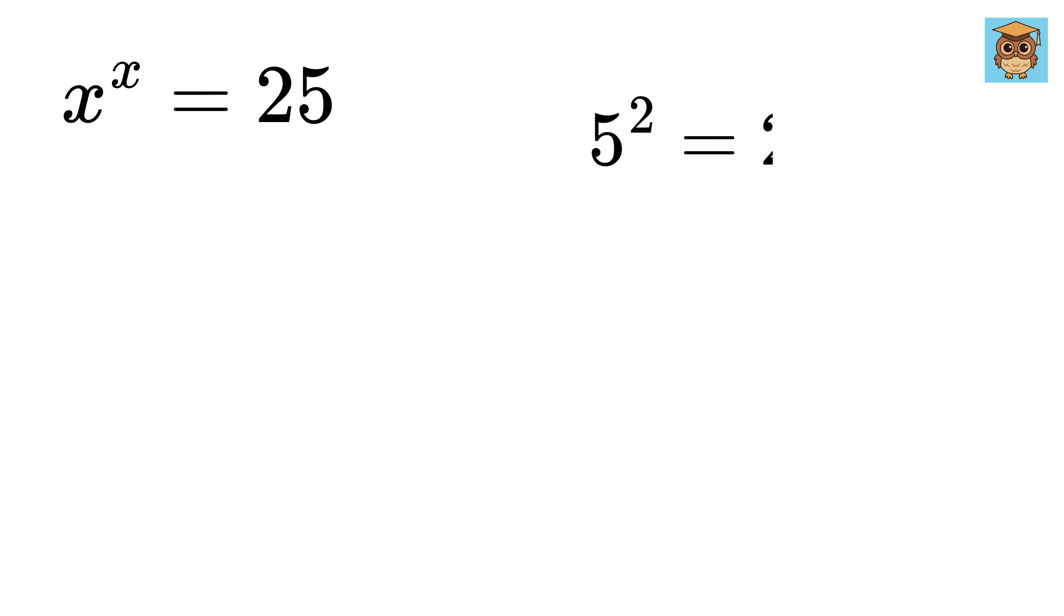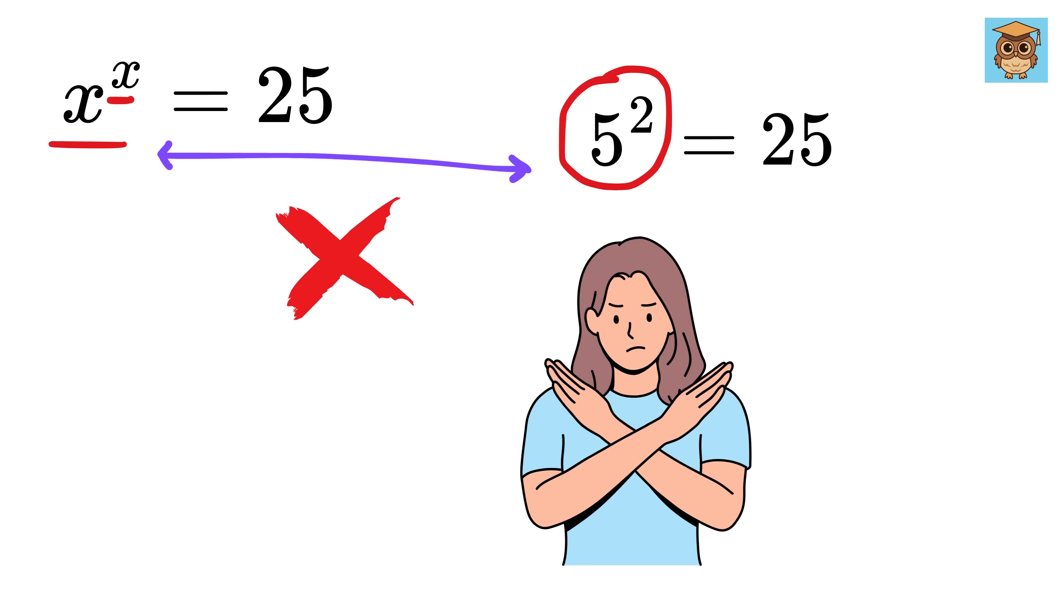First thing that comes to mind is that 25 can be written as 5 squared. But if you look at the equation, we have x to the x, and this is not of the form x to the x. So the answer is completely different and not what you think.